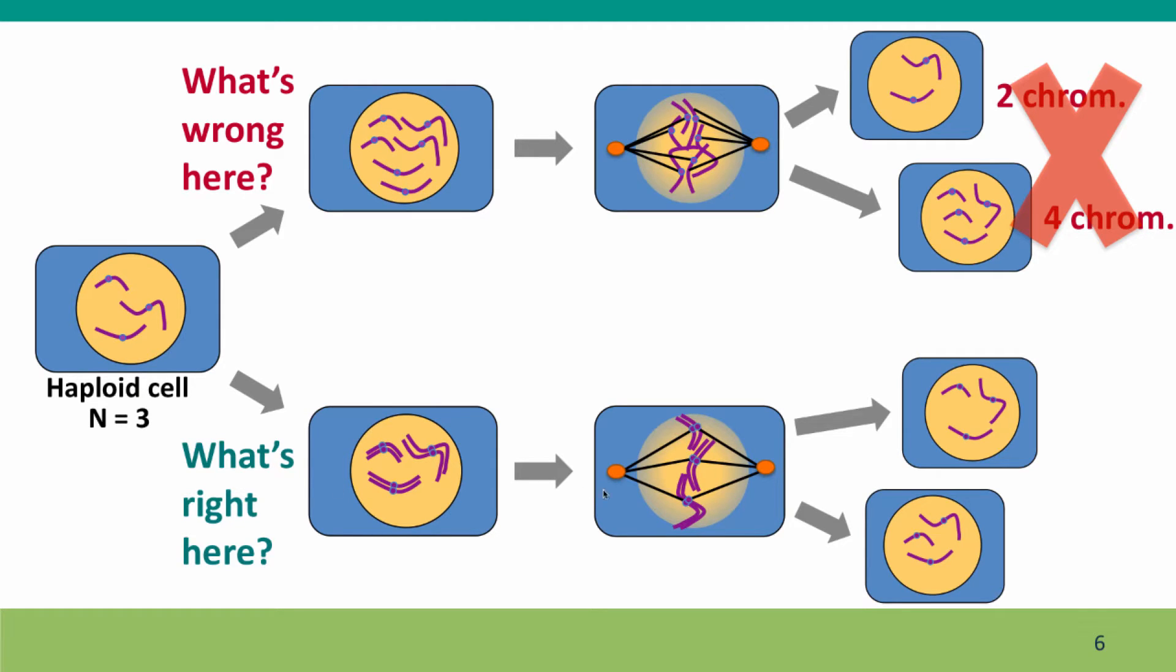Now here's mitosis drawn, done right. In this case, each of the daughter cells has three chromosomes. And they don't just have any three chromosomes. They have one each of the same chromosomes that were in the parent cell.